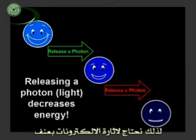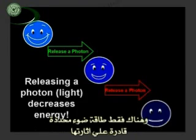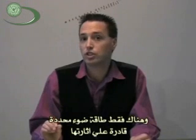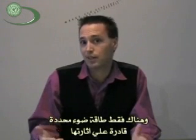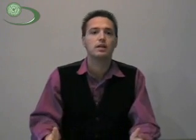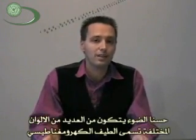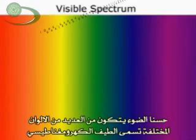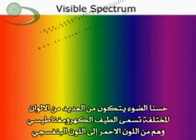You need to kick it hard enough, so only certain energies of light will be able to kick it hard enough. Now light comes in many different colors — it's called the electromagnetic spectrum.